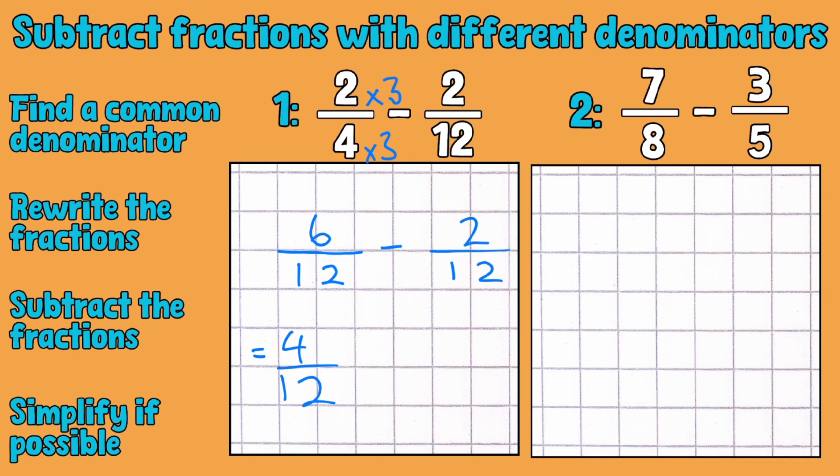So instead of trying to make an 8 a 5 or a 5 an 8 which we obviously can't do, we're going to have to multiply these numbers together. So 8 times 5 is 40. So they'll be my new denominators.